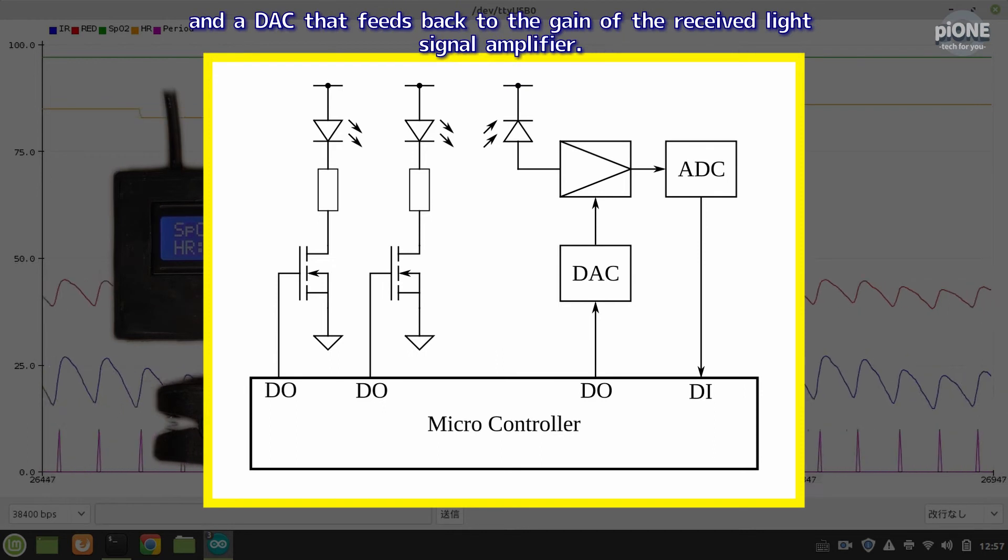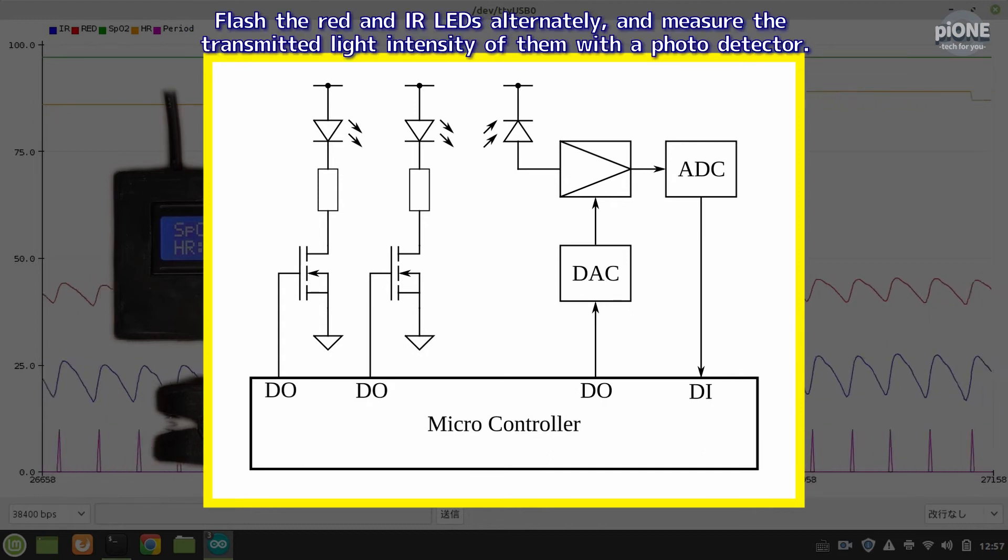and a DAC that feeds back to the gain of the received light signal amplifier. Flash the red and IR LEDs alternately, and measure the transmitted light intensity of them with a photodetector.